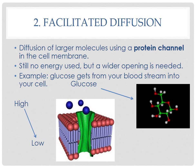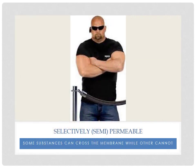Before talking about the third type of passive transport, we need to discuss the word selectively permeable — sometimes called semi-permeable. This means some substances can cross the membrane while others cannot. Just like a bouncer at a concert where some people are allowed to go backstage and some are not, your cell membrane is selectively permeable: some things it lets pass, some it does not.